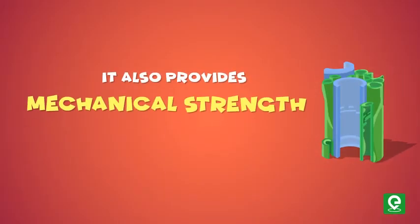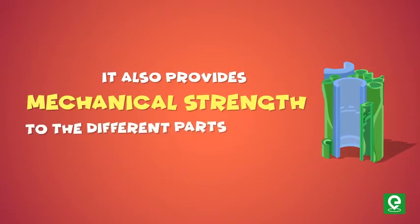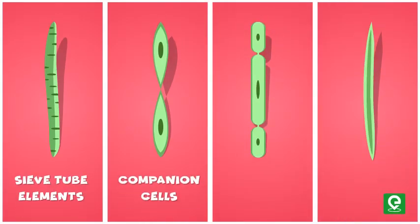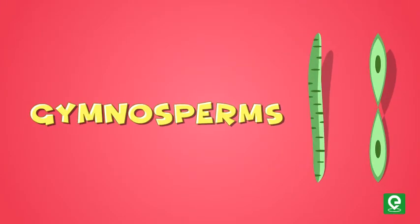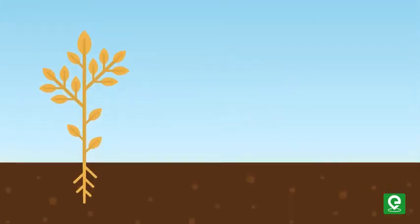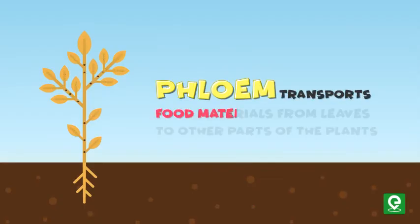Xylem also provides mechanical strength to different parts of plants. In angiosperms, phloem is composed of sieve tube elements, companion cells, phloem parenchyma, and phloem fibers. Gymnosperms lack sieve tubes and companion cells in their phloem. Phloem transports food materials from leaves to other parts of the plants.